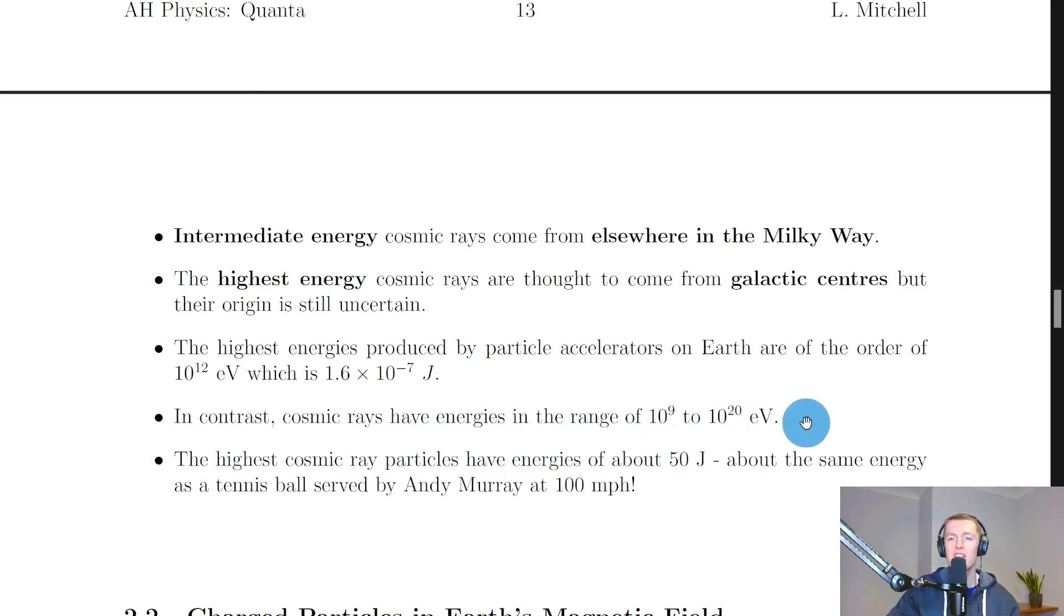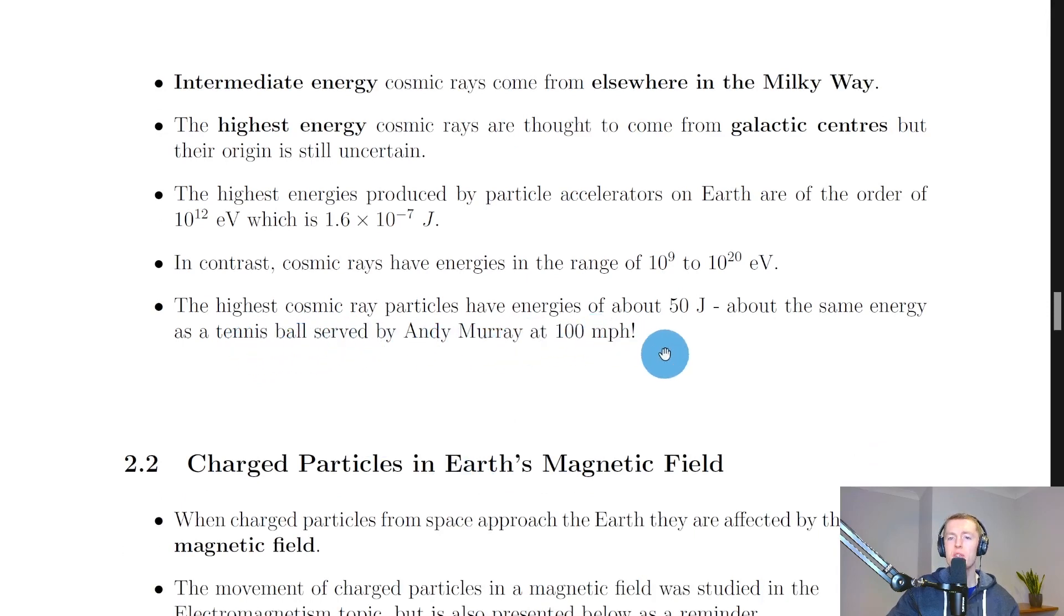10 to the 20 electron volts. And we say that the highest cosmic ray particles have energies of about 50 joules, about the same energy as a tennis ball served by Andy Murray at 100 miles per hour. So hopefully you realize that the highest energy cosmic rays can be much more energetic than the energies produced by particle accelerators,